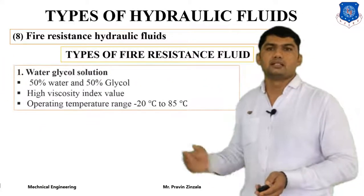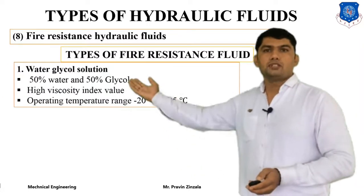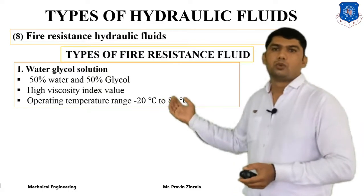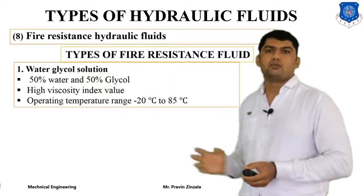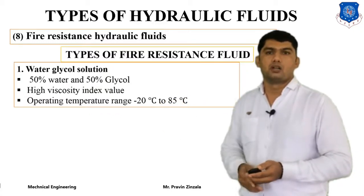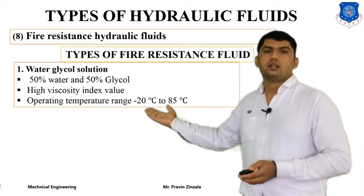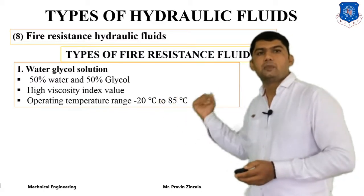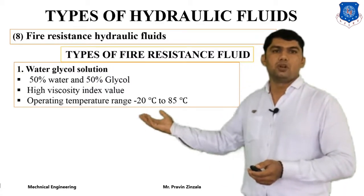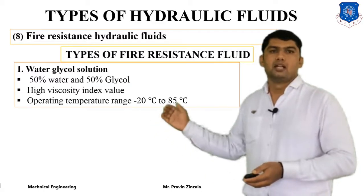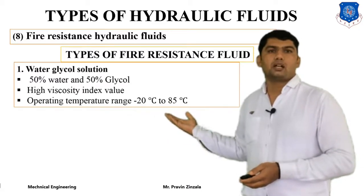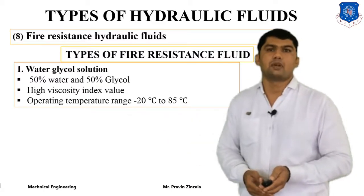The first fire resistance fluid is water glycol solution — 50% water and 50% glycol, with a proportional ratio of 1:1. It has a high viscosity index compared to water and vegetable oil, and its operating temperature range is minus 20 degrees to 85 degrees centigrade. So we can easily operate at lower temperatures, for example in foreign countries where temperature is below zero, and also up to 85 degrees centigrade.